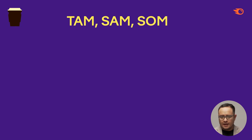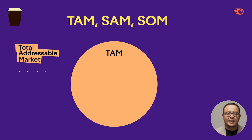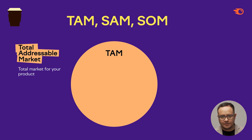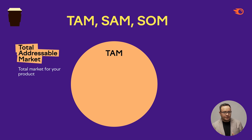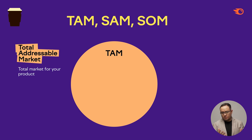Now let's start with TAM, SAM, and SOM. To build a viable strategy, we need to analyze our entire total addressable market, also known as TAM. This concept of TAM entails your target market — that is, all the interest that exists in the market for products and services you offer, or products and services similar to the ones you offer.